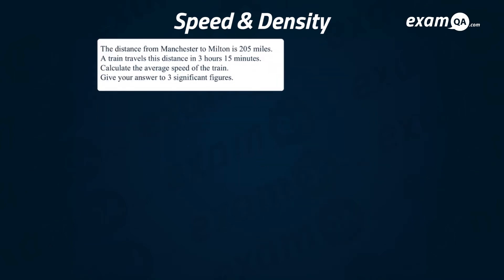So if we have an actual question let's see how we would do it. It says the distance from Manchester to Milton is 205 miles. It looks like it's a speed equals distance over time question and they say a train travels this distance in 3 hours 15 minutes. Calculate the average speed of the train. I'm just going to write speed equals distance over time.